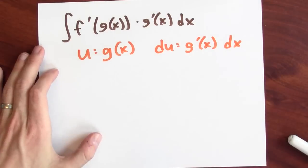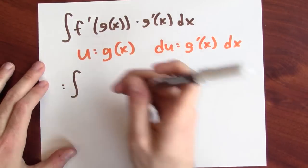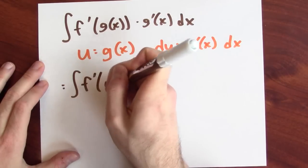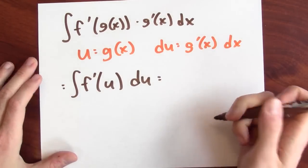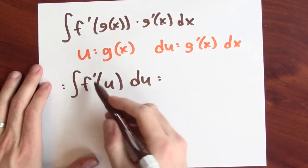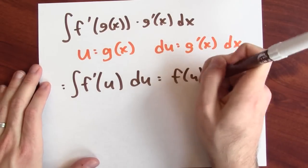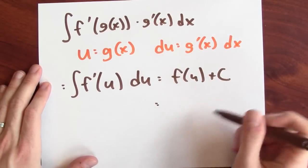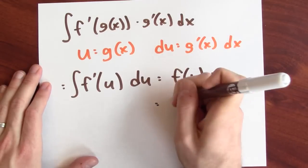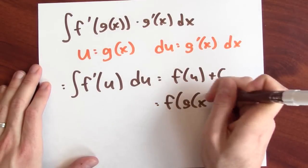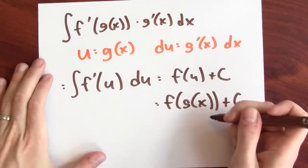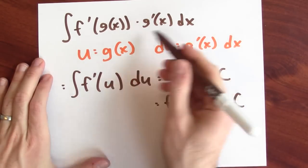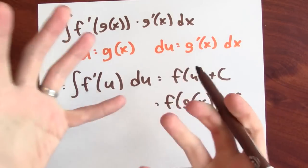So this anti-differentiation problem is the anti-differentiation problem f prime of u. And this is now du. But I know an anti-derivative of a derivative - it's just the original function. And in this case, u is g of x. So this is f of g of x. I know, because I can really see this working. The derivative of this composition is this. I mean, it's just the chain rule.